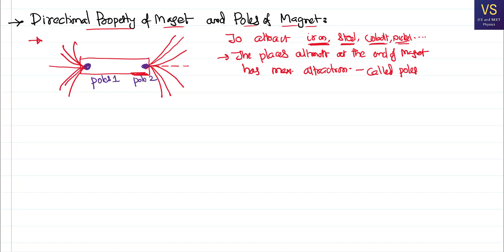Every magnet always comes with two poles. These two poles are opposite in nature — they have certain properties such that they are opposite to each other. So which pole is what? You want to name these poles — one as north pole and another as south pole. The question is, why do you name them as north pole and south pole?